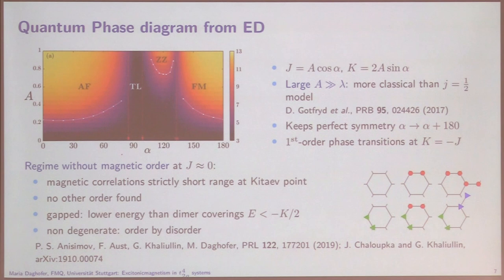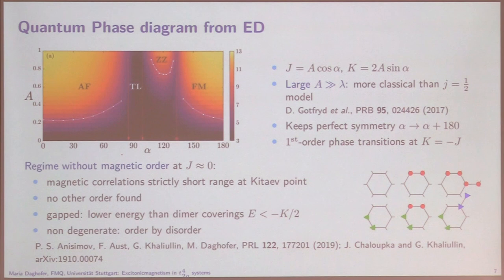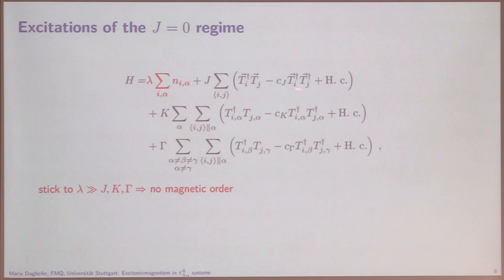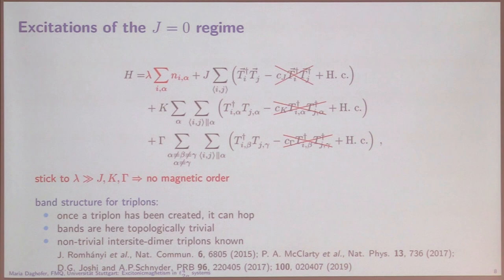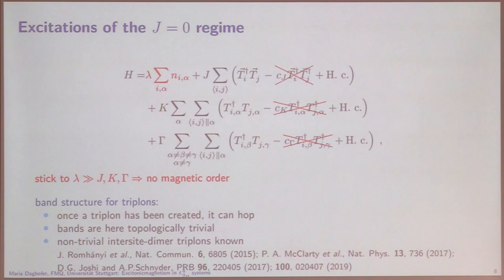We have a bit of a guess for the wave function. The ordered states are similar to the Kitaev-Heisenberg model we know for spin-one-half. For the excitations in the non-magnetic regime, where lambda is large, there are not many triplons. In that limit we can leave out terms that create two triplons, because that's really expensive in energy. This leaves something that looks like a band structure: a triplon is created by a passing neutron or similar, and then it can hop. These bands are topologically trivial.